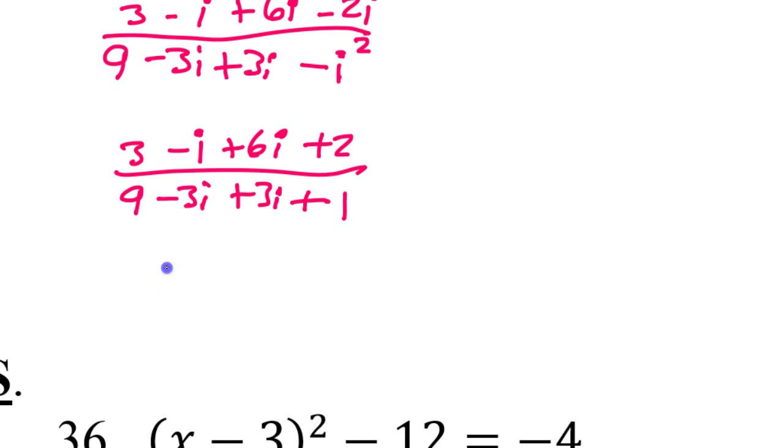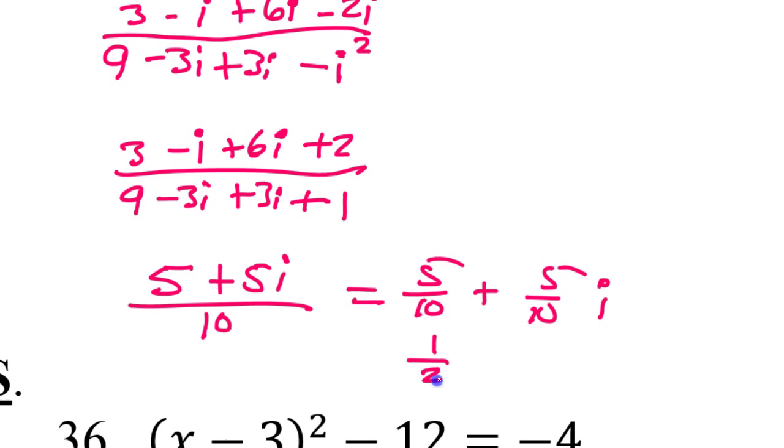That's going to give me in the numerator 5 plus 5i. And then the denominator is going to give me 10. That gives me 5 over 10 plus 5 over 10i. That's 1 half plus 1 half i.